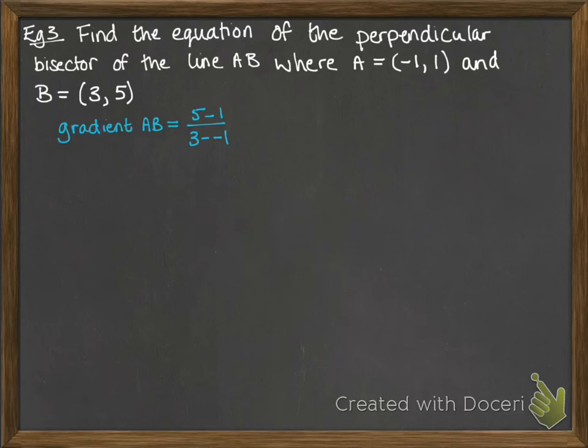So, that is 4 over 4, which gives us a gradient of 1. That means the gradient of the perpendicular bisector will be the negative reciprocal of that. So, that is minus 1.